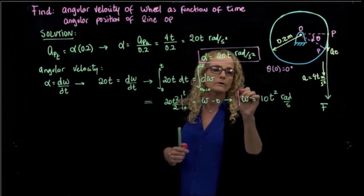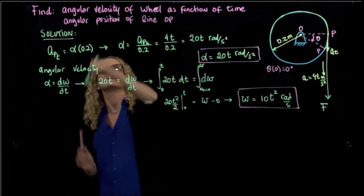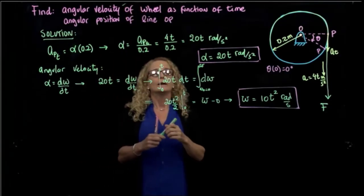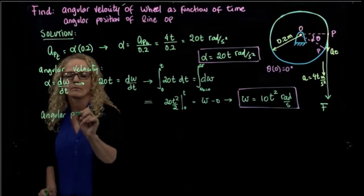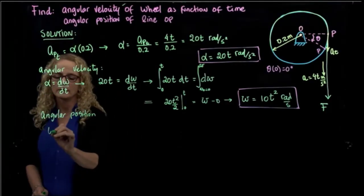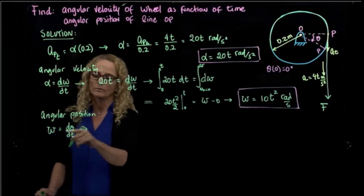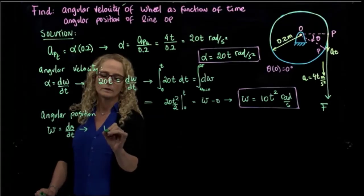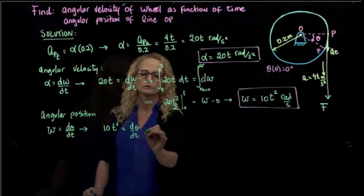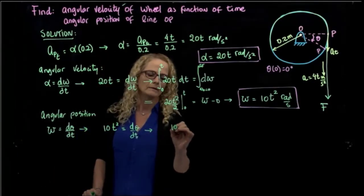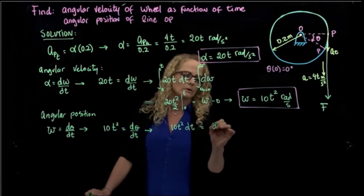That is the second value we were asked to find. We have found the angular acceleration and the angular velocity. Now we want to find the angular position. The angular velocity is the derivative of the angular position with respect to time. So we have 10T² = dθ/dt, which gives us 10T² dt = dθ.